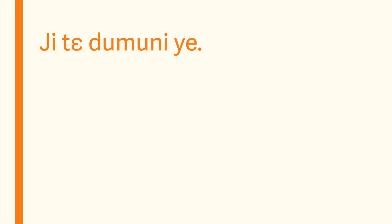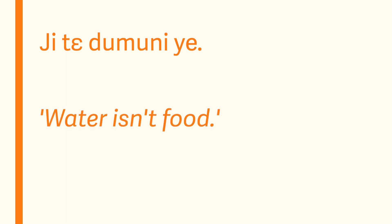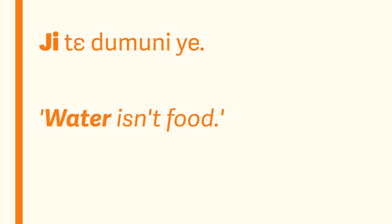Just like I pointed out above, when you're using negative equative constructions, you can also have sentences that only use common nouns. For instance, you could say something like 'Ji te dumini ye,' which would mean 'water isn't food' — ji meaning water, and dumini meaning food.